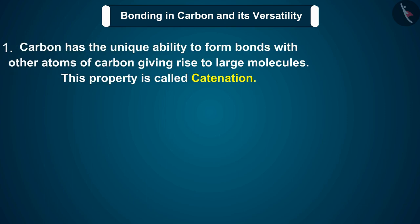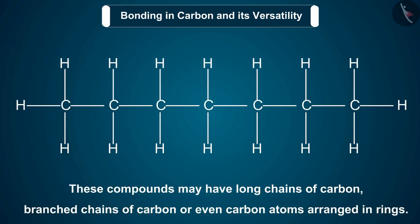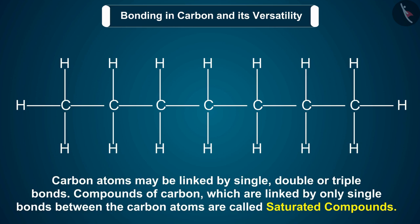Two factors are noticed in the case of carbon. One, carbon has the unique ability to form bonds with other atoms of carbon, giving rise to large molecules. This property is called catenation. These compounds may have long chains of carbon, branched chains of carbon, or even carbon atoms arranged in rings.